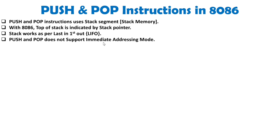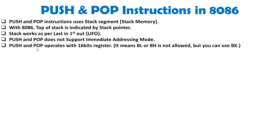What is immediate addressing mode? Along with the instruction, you cannot write data directly. With push in 8086, you have to write registers only — you cannot directly use data with push and pop, so it does not support immediate addressing mode. Also, push and pop work with registers, but those registers must be 16 bits — AX, BX, CX, DX, as well as SI and DI. You cannot use BL or BH, which are 8-bit registers.